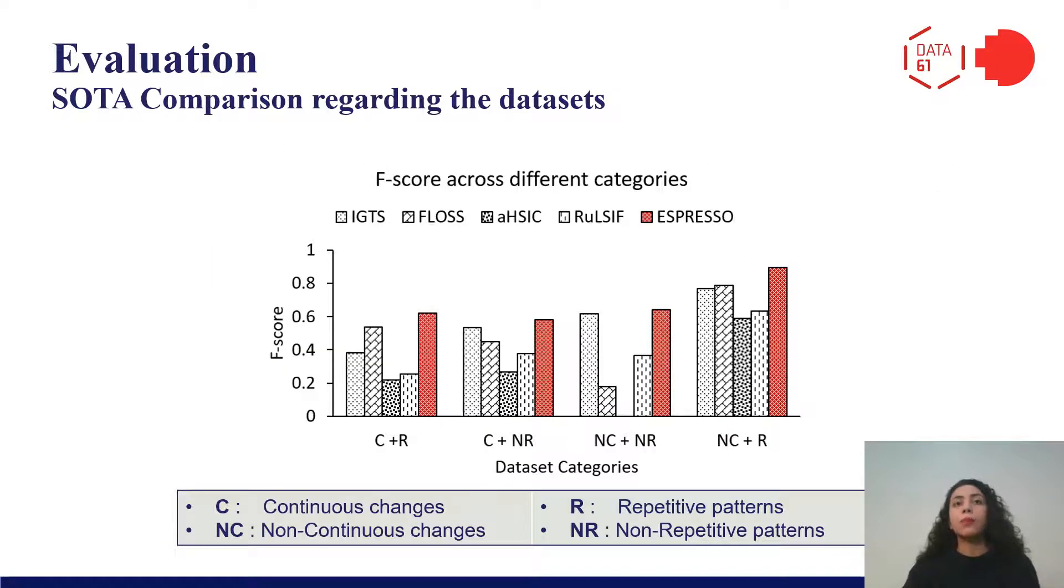We also compared the effectiveness of each method according to the category of input. Here, you can see FLOSS as a shape-based method cannot capture segments in datasets which contain not repeating patterns. On the other hand, statistic-based methods do not perform very well in continuous datasets with gradual changes. But Espresso outperforms all other methods in all types of input data, no matter if the data include continuous changes or repeated patterns.